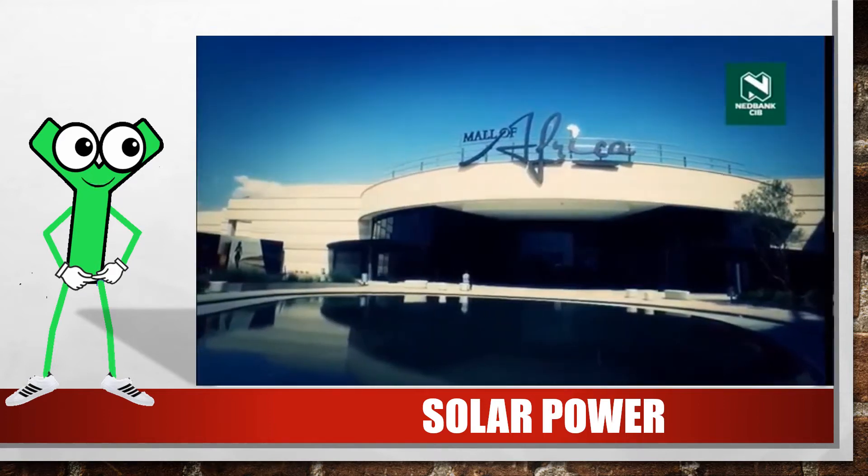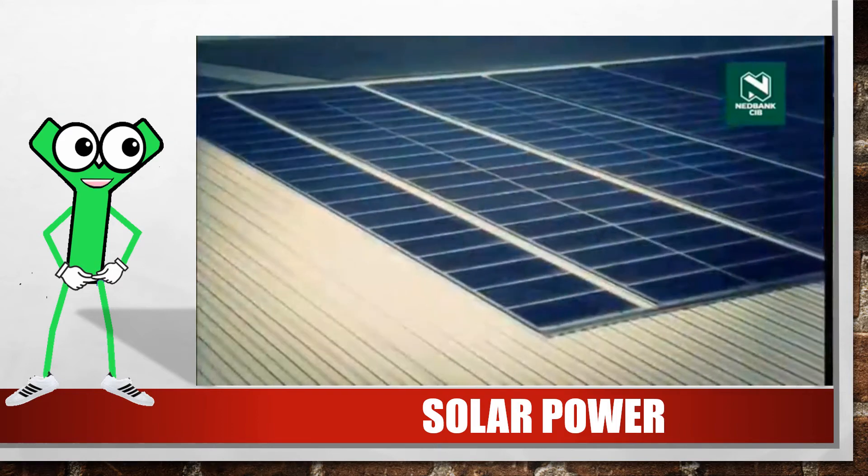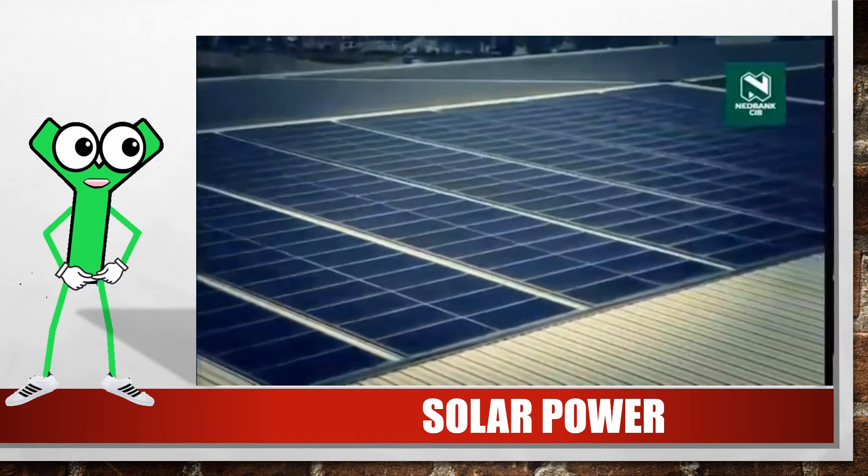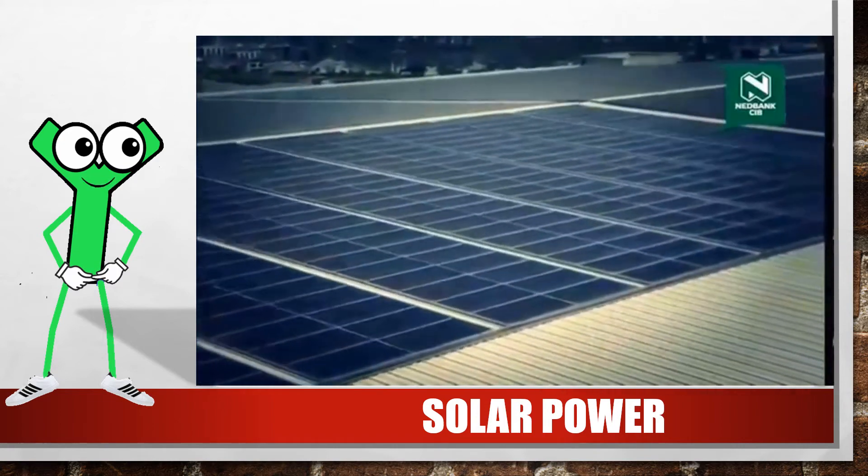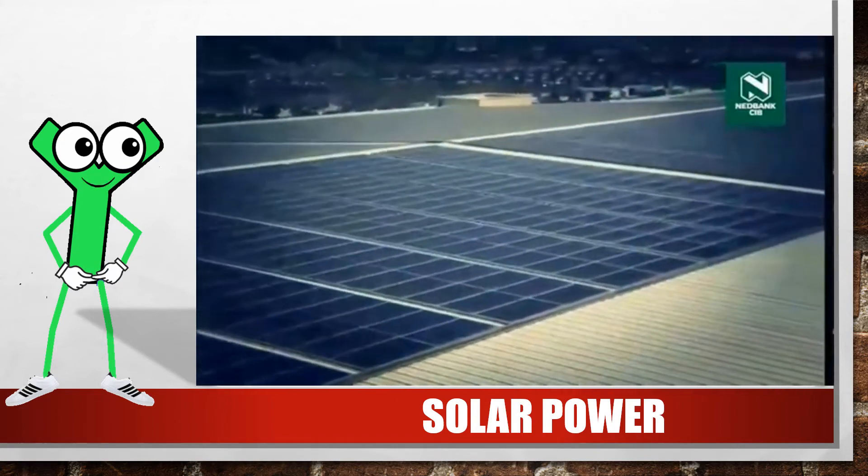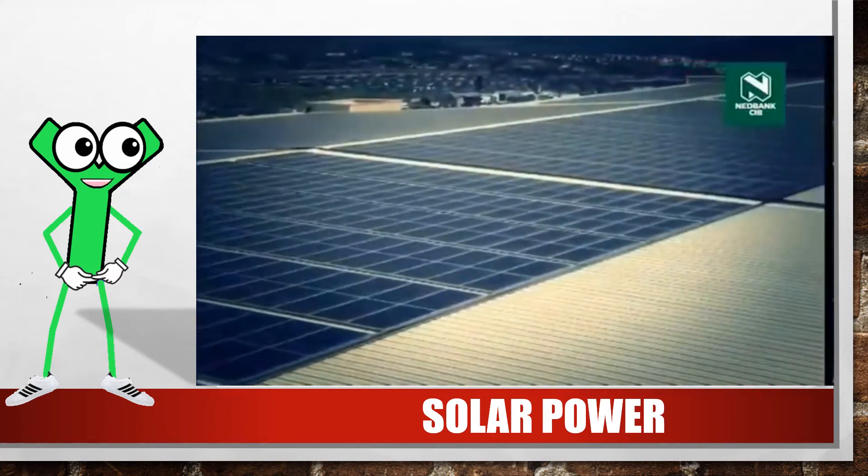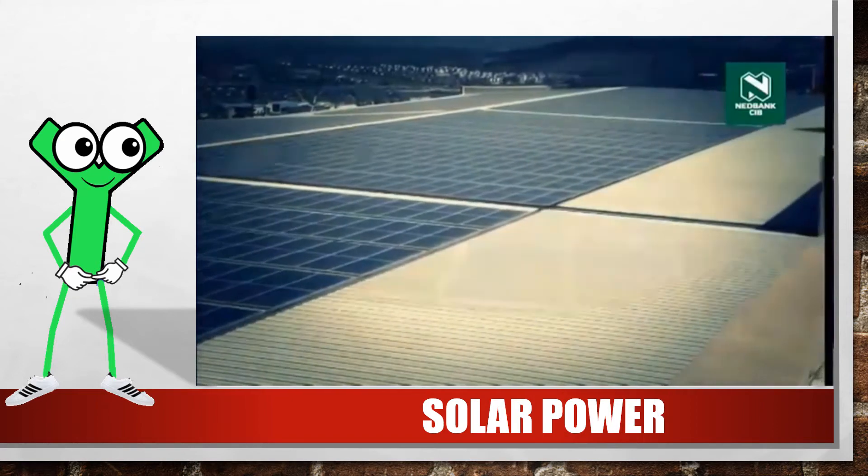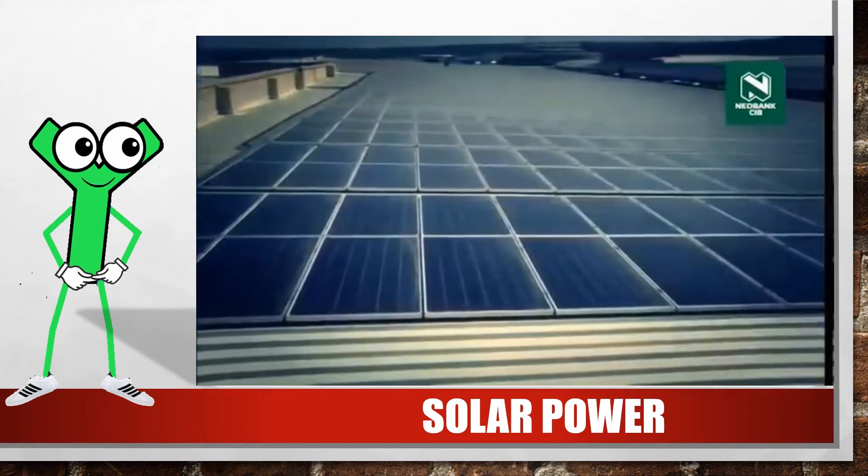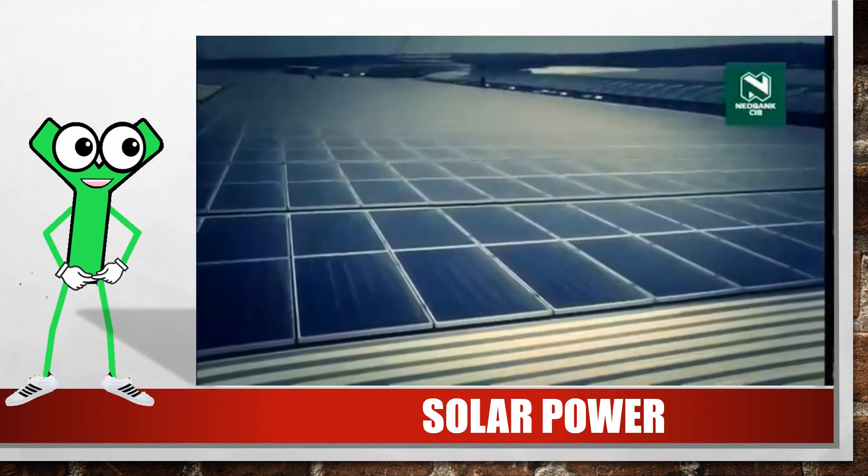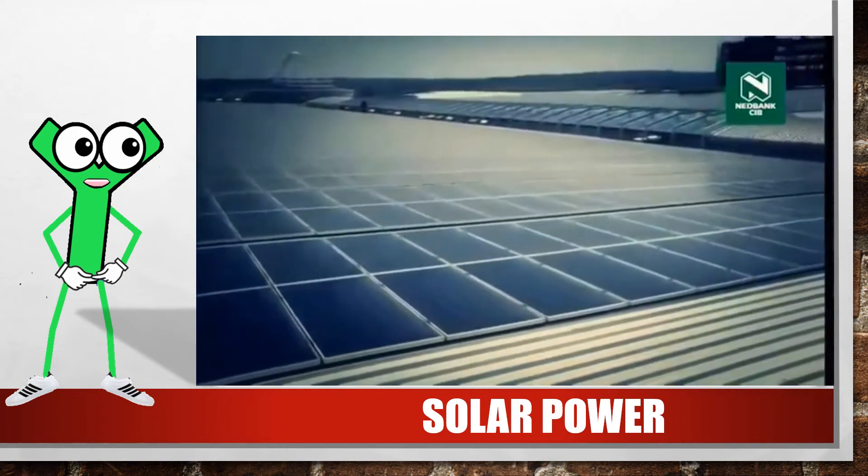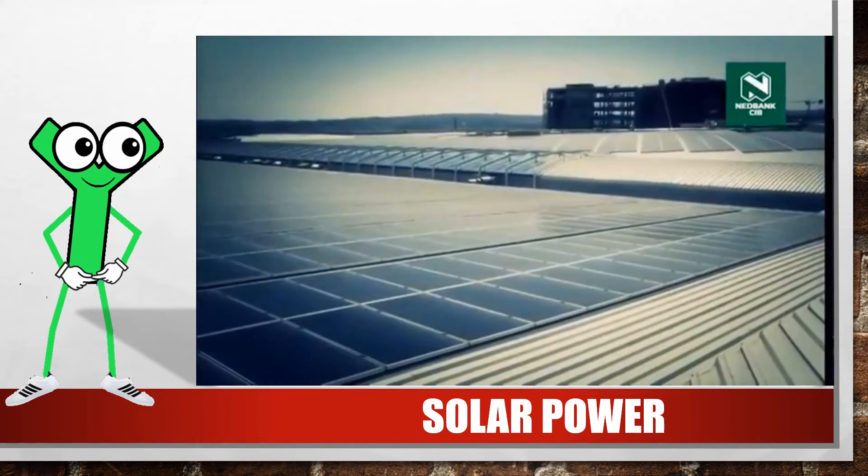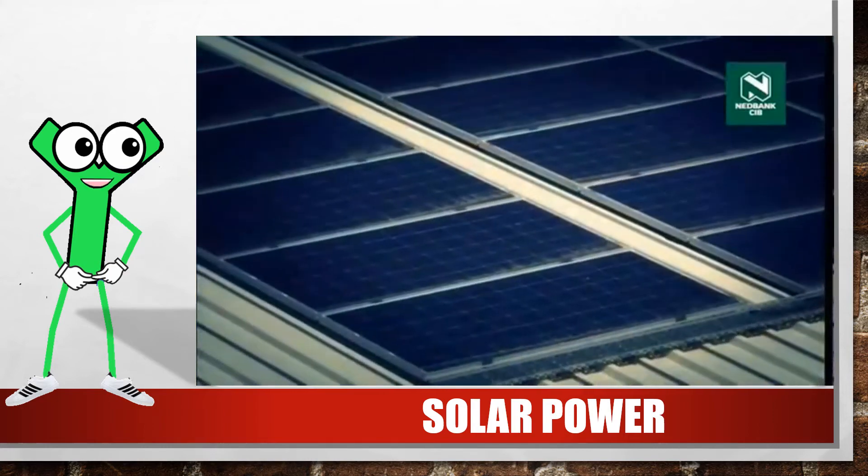The owners of the Mall of Africa have invested millions in solar panels on the roof of the centre. This means that they do not have any problems when Eskom implements load shedding and they save a lot because they don't have to buy power from Eskom. They can even contribute electricity to the national power network. The solar panels also drop the carbon footprint for the Mall of Africa considerably. Your carbon footprint is a measure of how much carbon dioxide is released in the atmosphere by your doing.